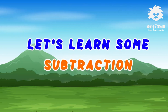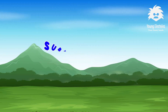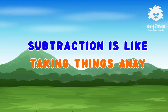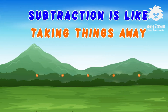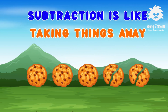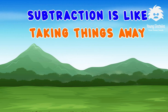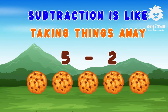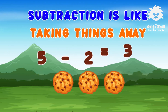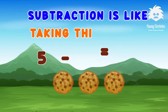Let's learn some subtraction. Subtraction is like taking things away. If you have five cookies and you eat two, you can use subtraction to find out how many cookies you have left. So, five cookies minus two cookies equals three cookies left. It helps you figure out what's left after you've taken some away.